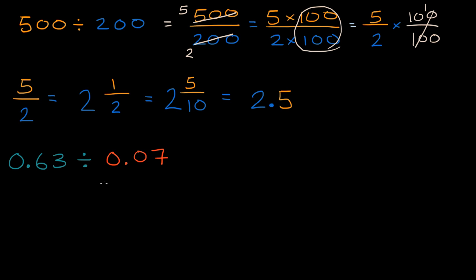Well, there's multiple ways to tackle it. One way is to think about both of them in terms of hundredths. So, for example, this is 63 hundredths. And this right over here is seven hundredths.